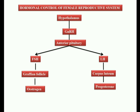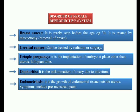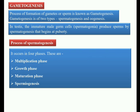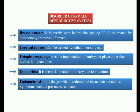Now, the disorders of the female reproductive system. The first is breast cancer — an abnormal increase or division of cells. Breast cancer is rarely seen before the age of 30, but may occur after 30. It is treated by mastectomy, which means the removal of the breast.